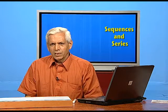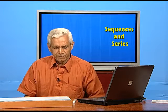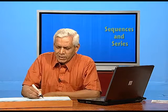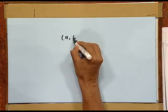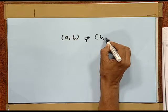We are all familiar with ordered pairs. It has two elements — may be numbers, integers, fractions, anything. This pair is not equal to that pair, which means in an ordered pair the position of the element is important.